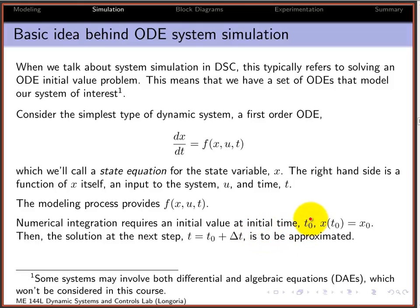So the numerical integration scheme, given the initial time and the value of the state or states at the time, you can then step in time every delta T seconds and approximate the state at future times. This is something that you may have been introduced to in your numerical methods or computational methods class.